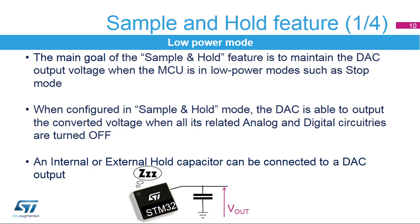The sample and hold feature maintains the DAC output voltage while not actively driving continuously. It relies on an internal or external capacitor that holds the voltage level at the end of the sample period. Then the DAC output can be set in high impedance. The capacitor will discharge over time, which is why a refresh period has been defined. Upon expiration of the refresh period, the DAC output will be actively driven again to recharge the capacitor.